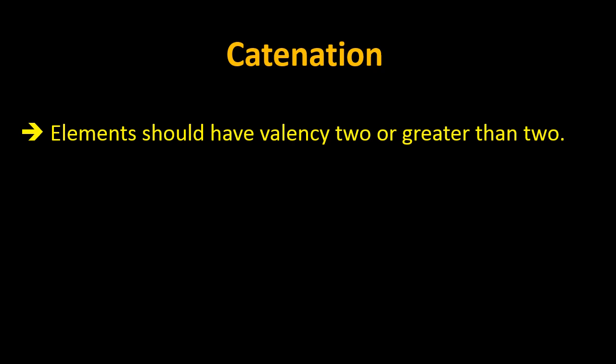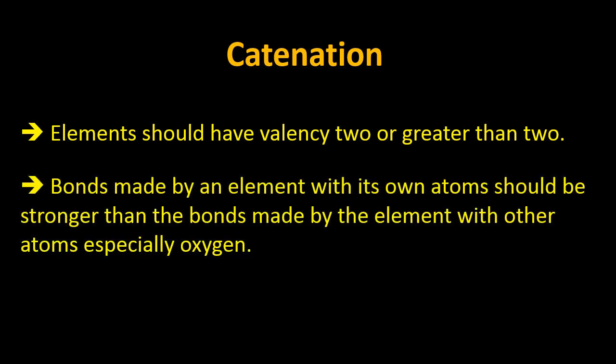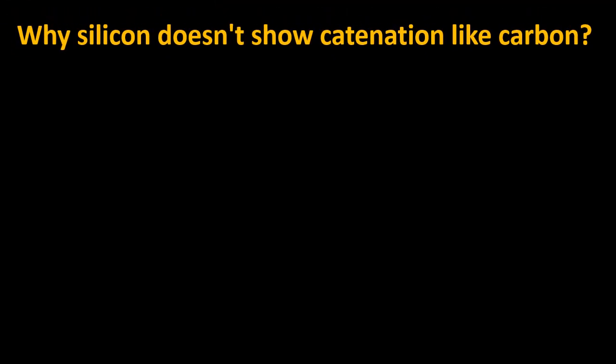There are two basic conditions for an element to exhibit catenation: first, the element should have a valency of 2 or greater. Second, bonds made by the element with its own atoms should be stronger than bonds made with other atoms — inner bonding is always stronger than outer bonding. Carbon forms bonds with other carbon atoms, and since the same atoms join together, they give a stronger bond. Now, the question arises: why doesn't silicon show catenation like carbon, although silicon also belongs to group 14? This is a very important exam question.